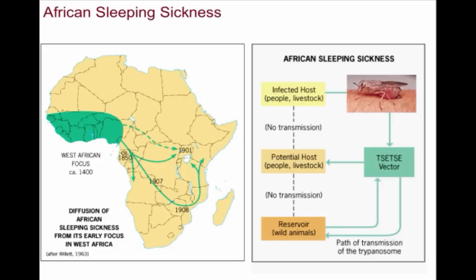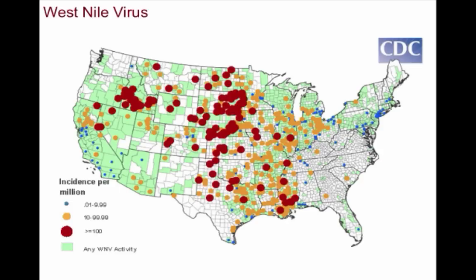There is sleeping sickness, which is passed on by the tsetse fly, and can cause swelling in your lymph nodes and make you very lethargic — which is why it's called sleeping sickness. There is also the West Nile virus, in which mosquitoes are the prime vector, with birds being the most commonly infected animal and serving as the prime reservoir host.